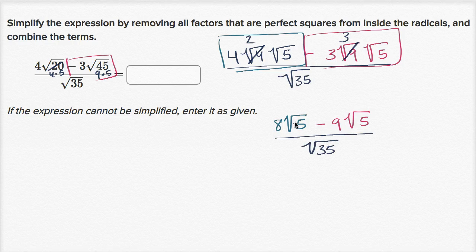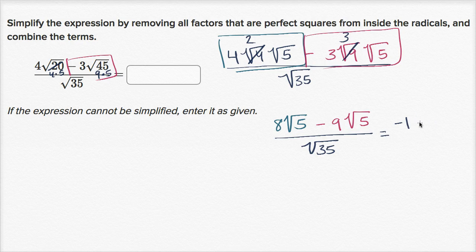If I have eight of something and I subtract nine of that something, I'm going to have negative one of that something. So I can say negative one times the square root of five, or just negative square root of five, over the square root of 35.